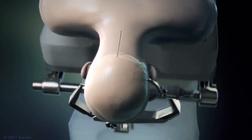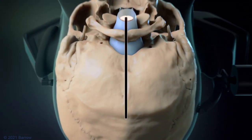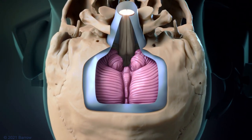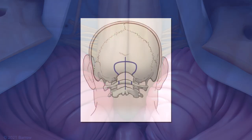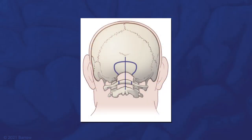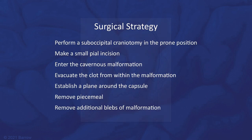The patient was positioned prone, and a simple midline incision was made with a small mini suboccipital craniotomy and C1 laminectomy. Surgical strategy consisted of this small suboccipital craniotomy, a small pial incision, entrance into the cavernous malformation, evacuation of clot from within, establishment of a plane around the capsule, piecemeal removal, and finally removal of additional blebs of the malformation.